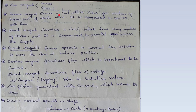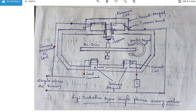Series magnet carries a coil which has few number of turns and of thick wire. It is connected in series with the line. Series magnet jo connected rehta hai, isme jo wire use kiya jata hai, less number of turns rehta hai, matlab bhoat hi kam turns rehta hai yehaan pe. And thick wire use kiya jata hai. Aur directly line ke saath series mein connect kiya jata hai.